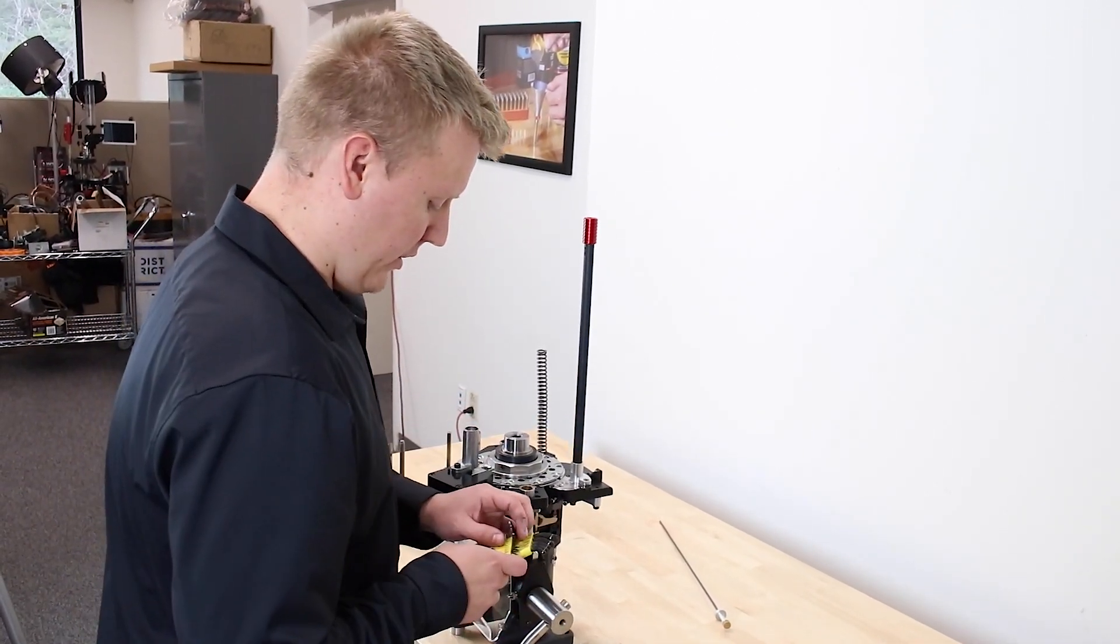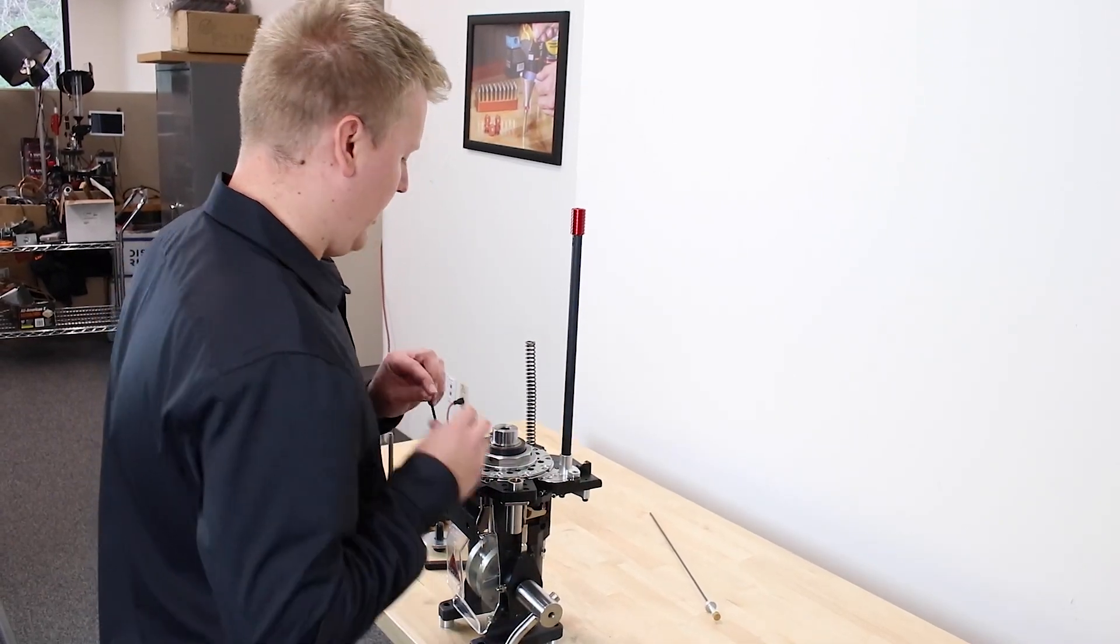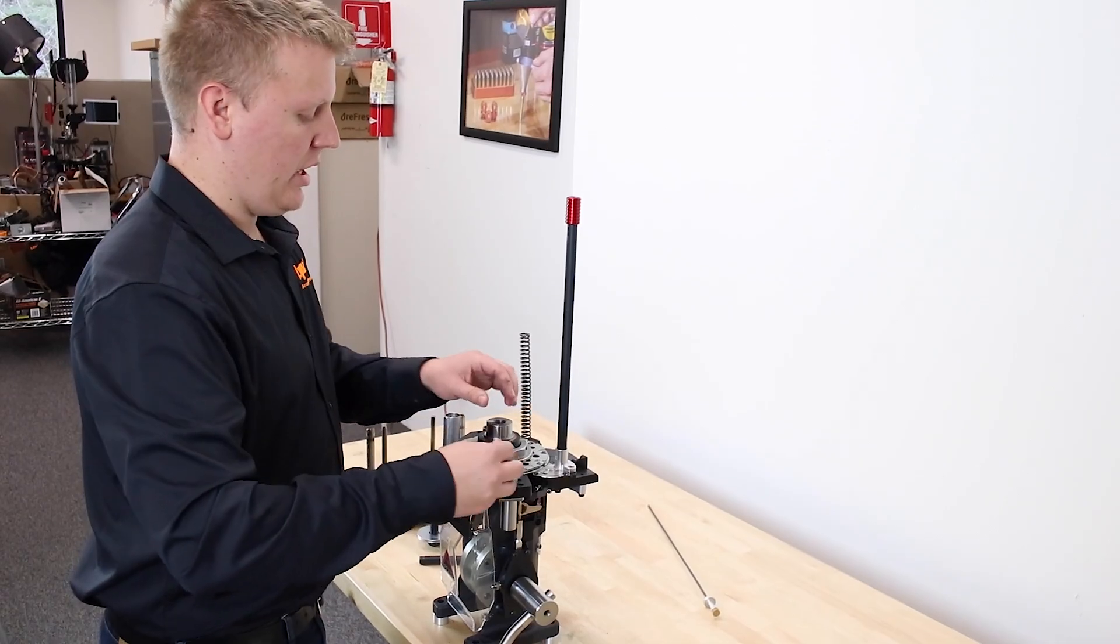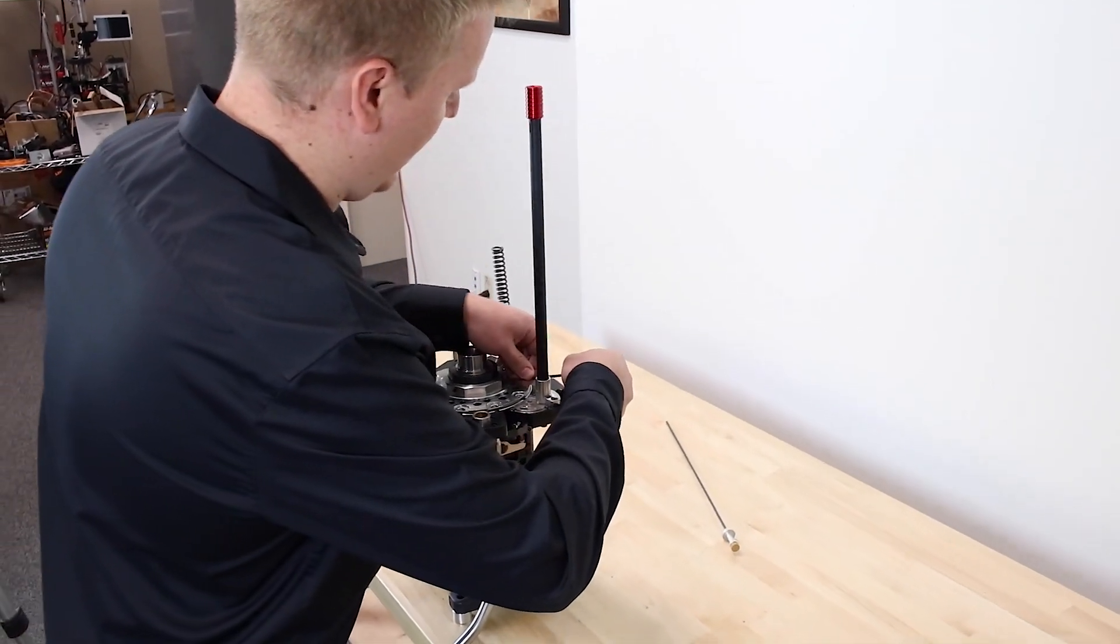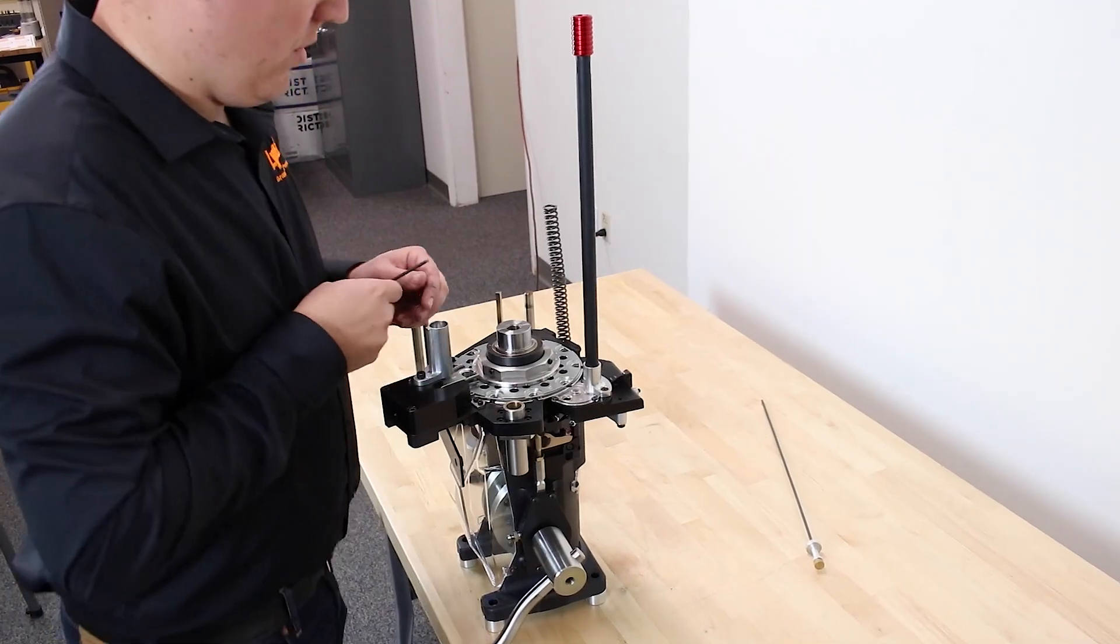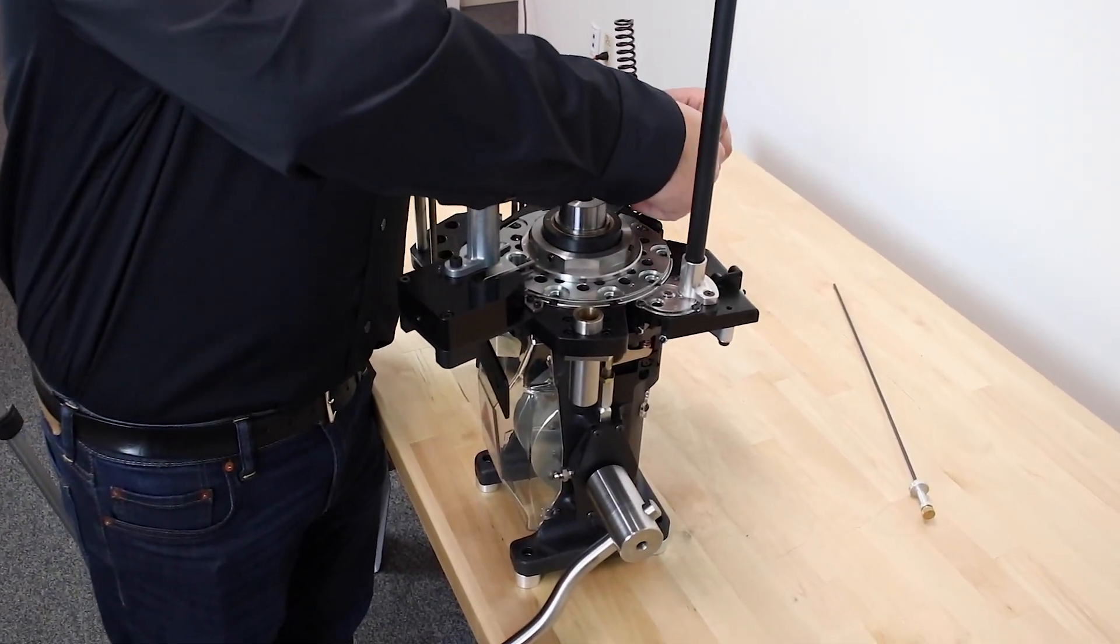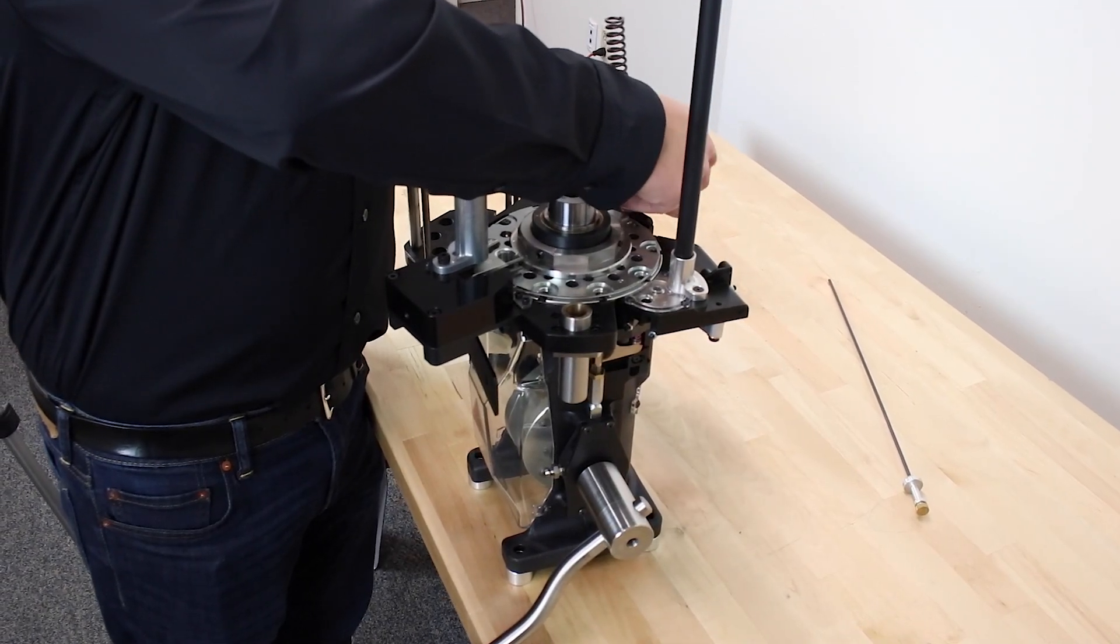Next thing we're going to do is take the one-eighth allen wrench and loosen the floor lock screws a couple turns. All we want to do here is take pressure off. We don't need to fully loosen.